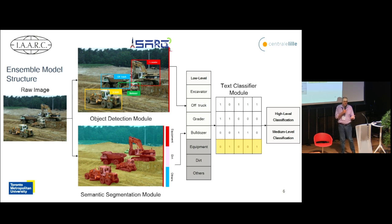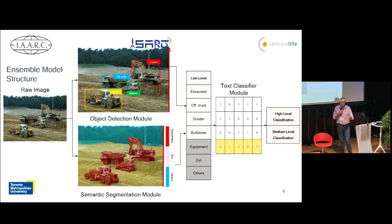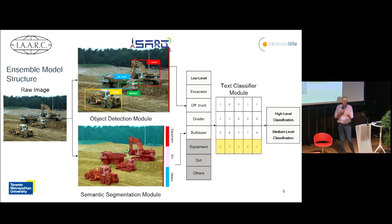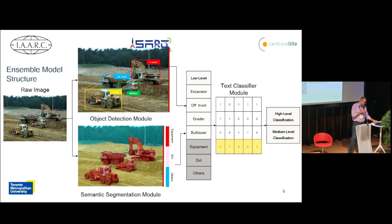Medium-level we define as actions — for example, earth moving happening, carpentry work is happening, masonry work is happening, or earth hauling happening. High-level we define as identifying a project type — for example, if it's a heavy construction, foundation construction, structural work, or something like that — where we can distinguish the project type.